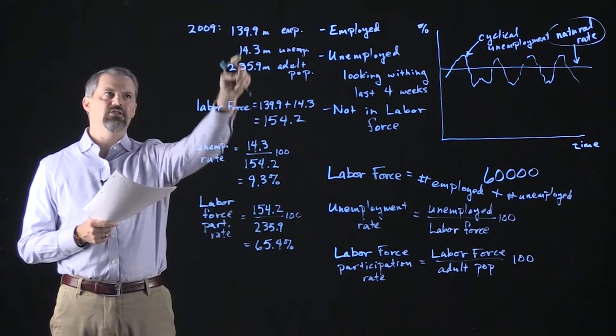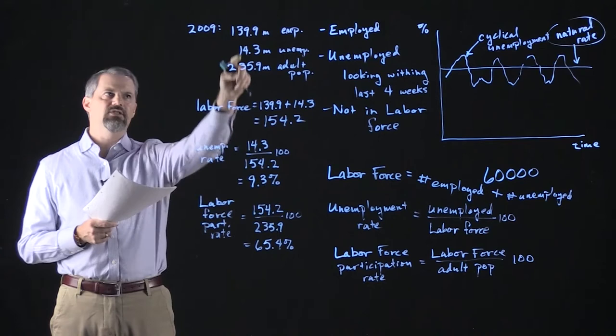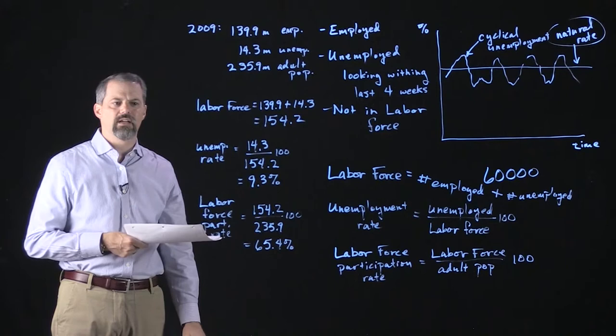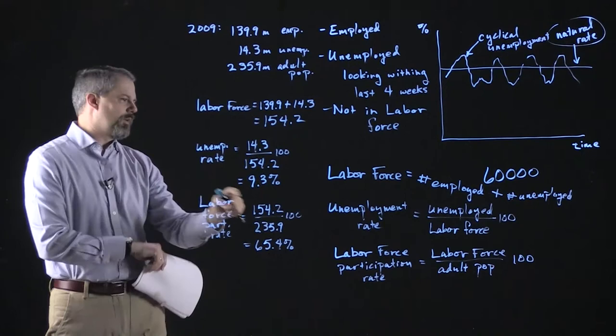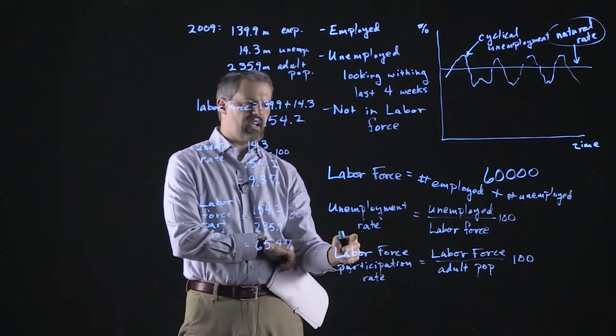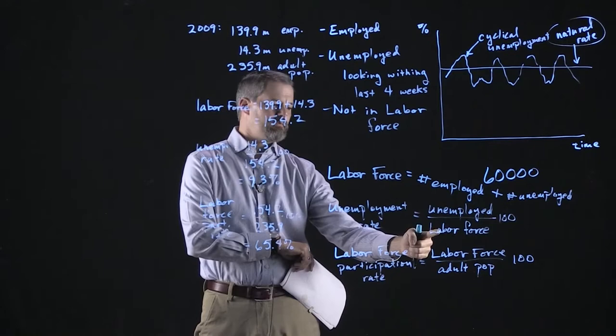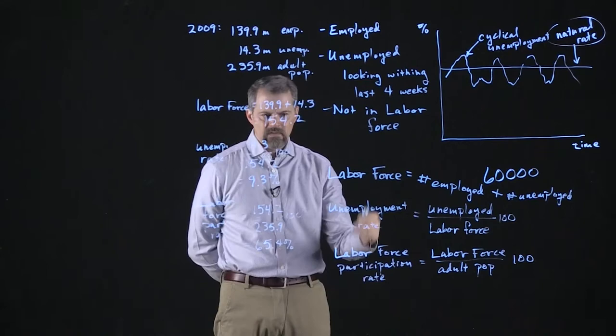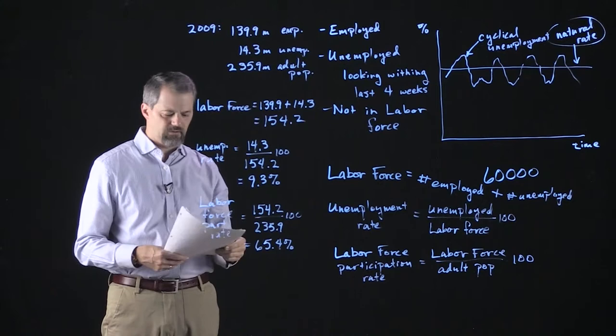There would also be questions where you'd have to calculate these statistics. You might be given numbers and asked to calculate the unemployment rate or labor force participation rate. Remember that with a formula like the unemployment rate formula, you've got three things: the rate, the number of people unemployed, and the labor force. You could be given any two and asked to solve for the third.